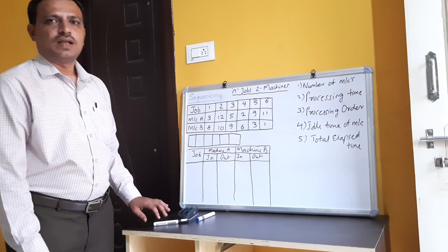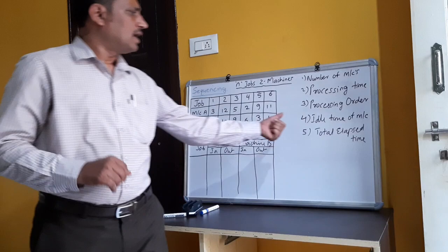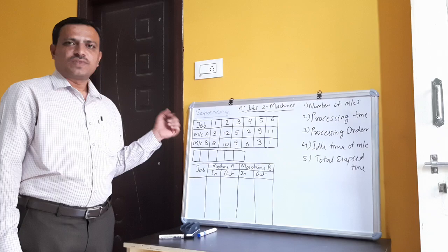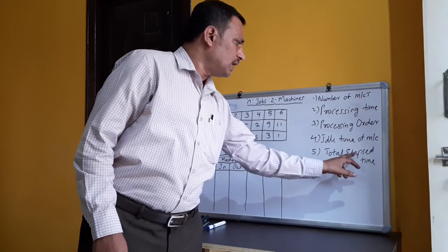Next is idle time of machine. Idle time of machine means when there is no job to perform on that machine, we call that the idle time of the machine. Next, total elapsed time — if we consider two machines, and we give the first job to the first machine, then complete the last job on the second machine, whatever total time it takes is called the total elapsed time.